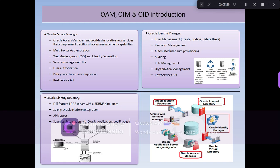Auto-provisioning means that whenever a user is created in the source system, they are automatically created in the target system using out-of-the-box connectors. Role management lets you create various roles to control page and module access. Organization management lets you create, update, and delete organizations and associate them to users. OIM also provides out-of-the-box APIs for creating users, associating roles, and performing all related operations.